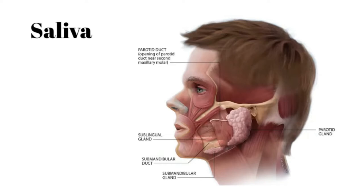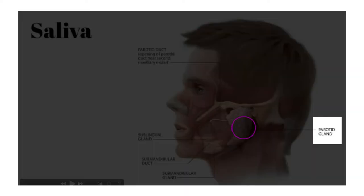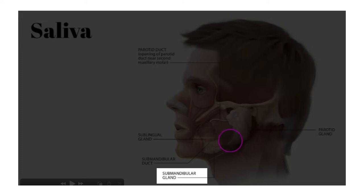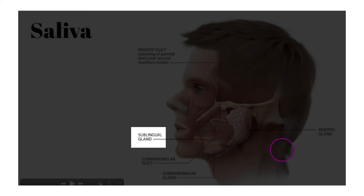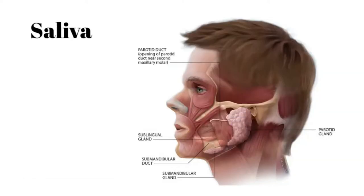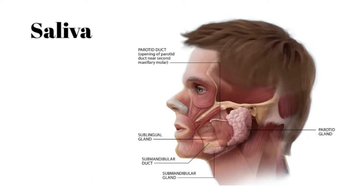In this image we are looking at three salivary glands: the parotid gland, the submandibular gland, and the sublingual gland. These are all paired glands — there is one on the left side and one on the right side. The submandibular gland is on the medial aspect of the mandible, and the sublingual gland is right below the tongue.